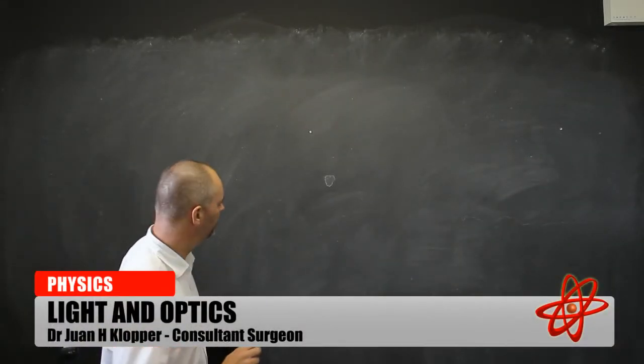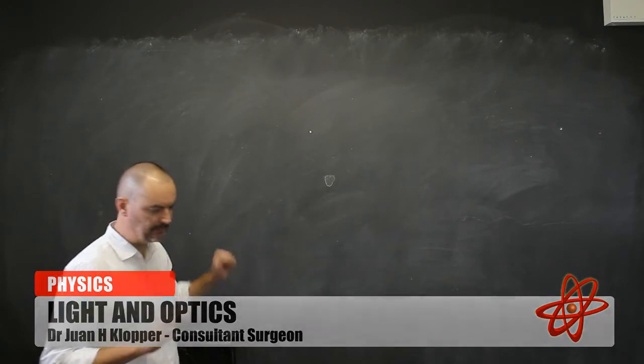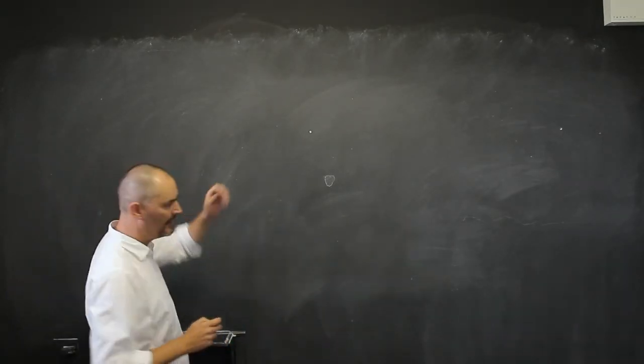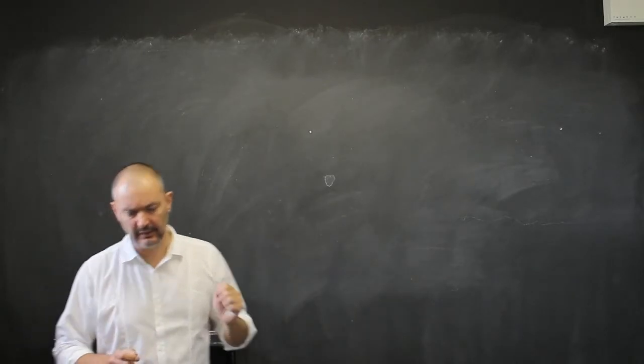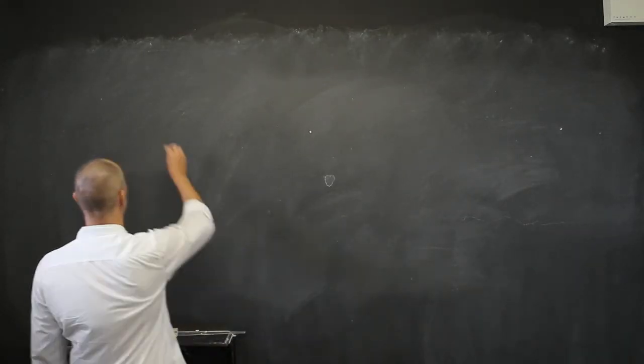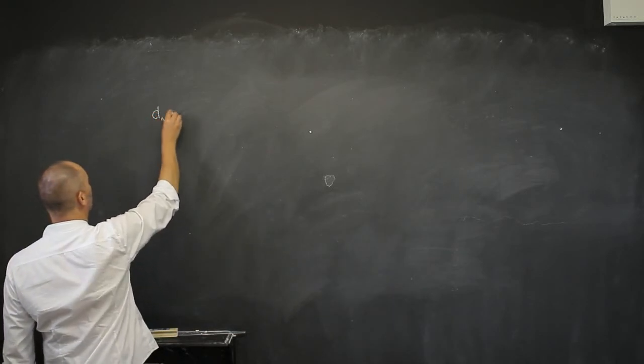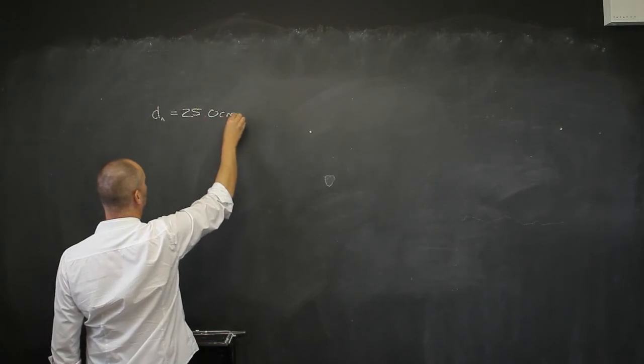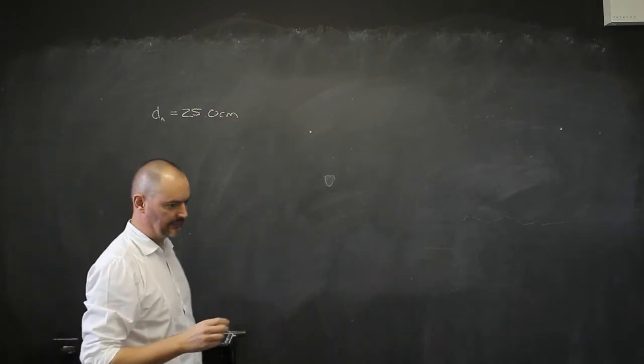In this section, I just want to start having a look at the optical instruments. The first thing we have to consider is just the human eye. And for the human eye, we're going to define a distance called the DN, the near point.